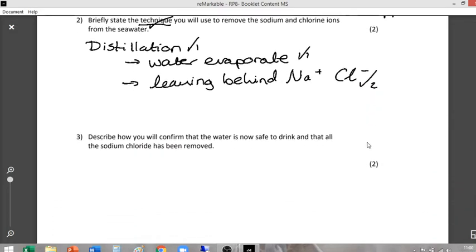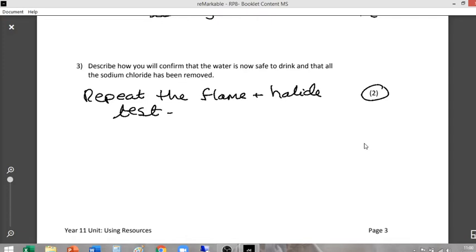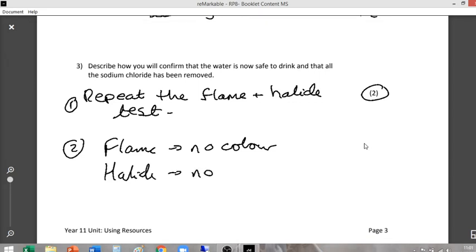Describe how you'd confirm that the water is now safe to drink and that all the sodium chloride has been removed. Well, you essentially repeat the test from earlier. So two marks: repeat the flame and halide test that we did earlier. That's mark number one. Mark number two is for matching that up to a result. So the flame test, there should be no color seen in the flame beyond just the wood burning. If you use the nichrome wire there'd be no color at all. And the halide test, no color change or no precipitate.